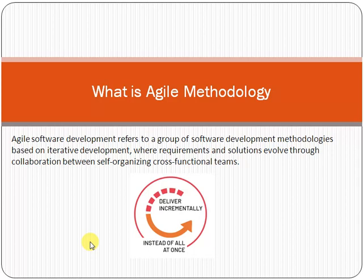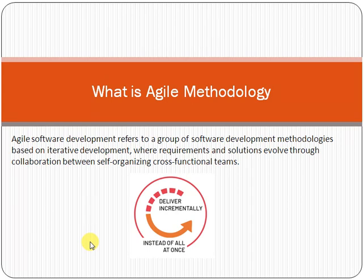In the waterfall model, customer feedback is received only at a very late stage. The customer's expectations may not be met — he is disappointed by what he receives versus what he expected. Waterfall is totally different from agile. In agile, we use the incremental or iterative approach, delivering things to the customer one by one and evolving the product over time, until it reaches a level that is totally acceptable to the customer. That is the concept of agile methodology. If you liked this video, please share it with your friends and colleagues. Thank you for your time.